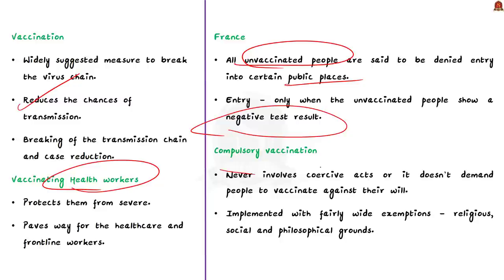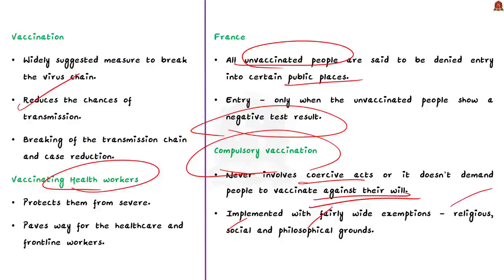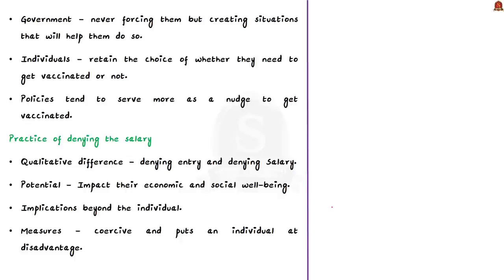Compulsory vaccination does not involve coercive acts — it does not demand people vaccinate against their will, since vaccines are given wide exemptions on religious, social, and philosophical grounds. France is not forcing people to vaccinate but creating situations where vaccination is required. For example, a person can stay home without being vaccinated, but if they want access to public places, they must be vaccinated or show a negative test. France is nudging — not forcing — citizens; the final choice remains with the individual.